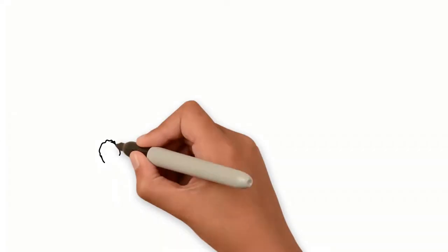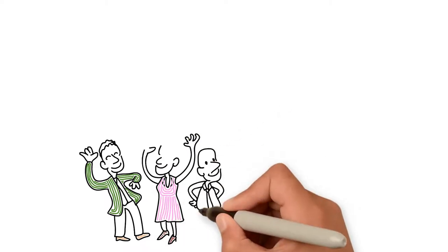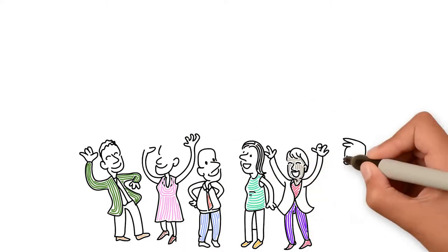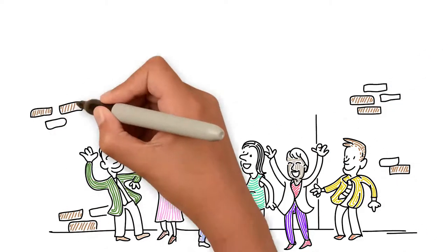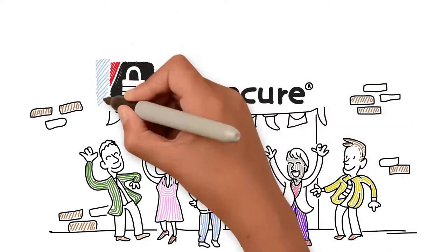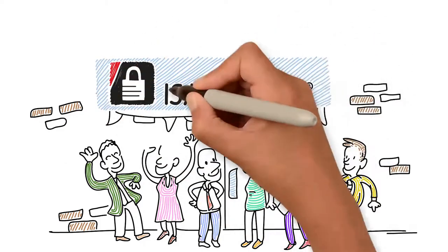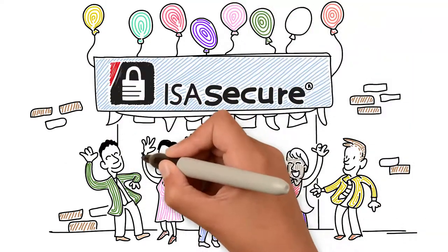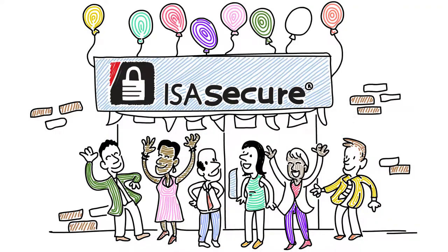The ISA Security Compliance Institute was started in 2007 to operate the ISA Secure Conformance Certification Programme, which provides the highest level of assurance possible for the cybersecurity of industrial automation control systems.